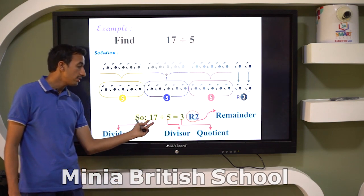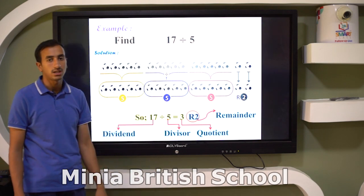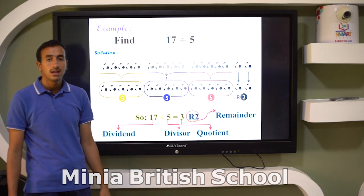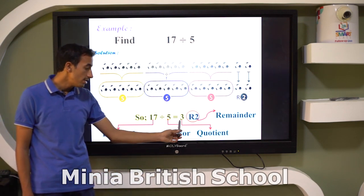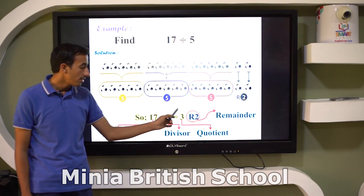Between dividend and divisor we have the division sign. And the answer here is called quotient.